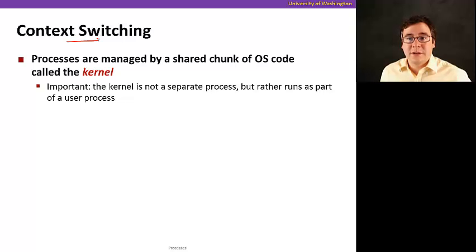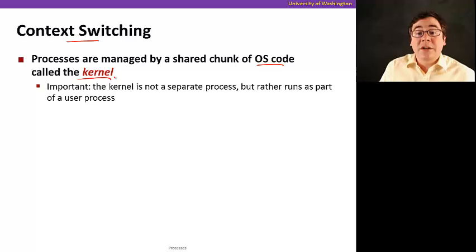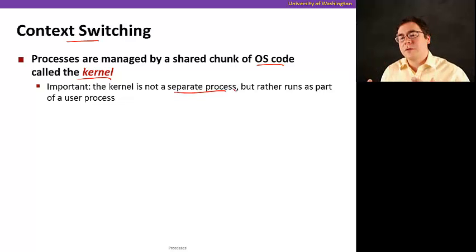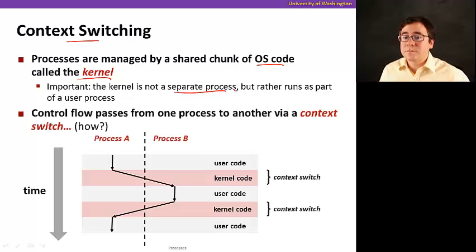So, this is what we call context switching. So, the processes are managed by a shared chunk of OS code called the kernel. And it's important to note that the kernel is not a separate process, but it's just a piece of code, a special piece of code that runs as part of a user process. But kernel code has special privileges.